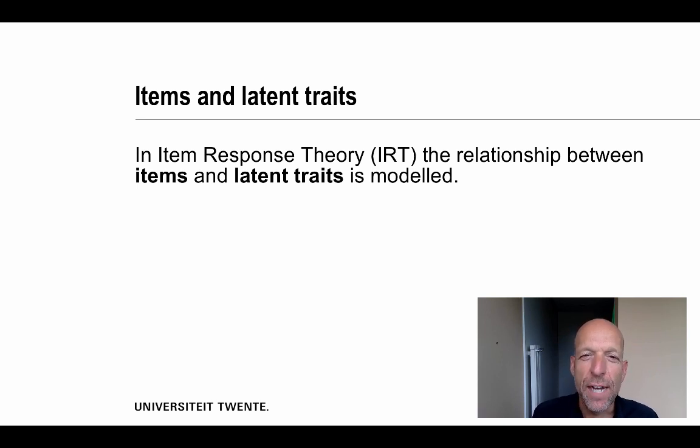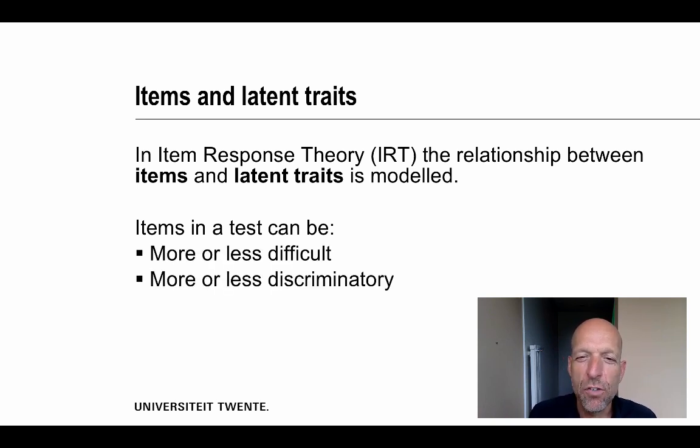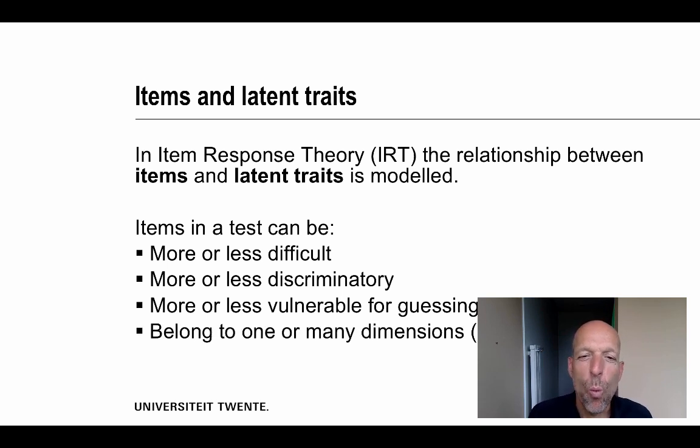We then take into account the fact that items can be more or less difficult, that the items can be more or less discriminatory, and if we use closed questions, say questions with four answering possibilities only, the possibility that they are vulnerable for guessing. Underlying item response theory is often the assumption that we are measuring one trait only, but you have to check for that.